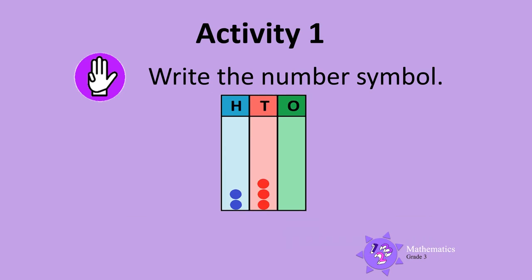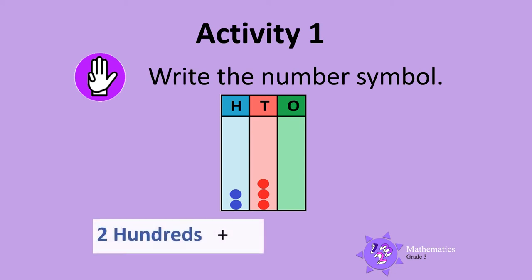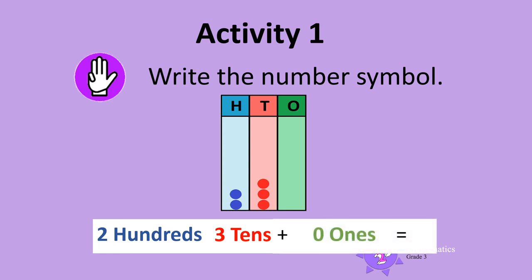Here is another one. Write the number symbol shown on this abacus. There are 2 counters in the hundreds column, so there are 2 hundreds. There are 3 counters in the tens column, so there are 3 tens. And there are 0 counters in the ones column, so there are 0 ones. So the number shown on the abacus is 230.